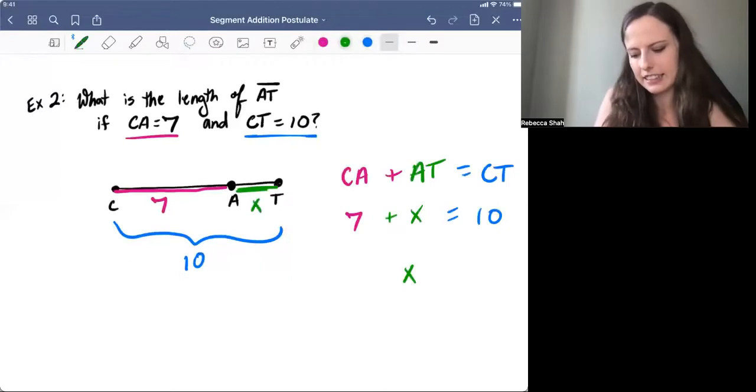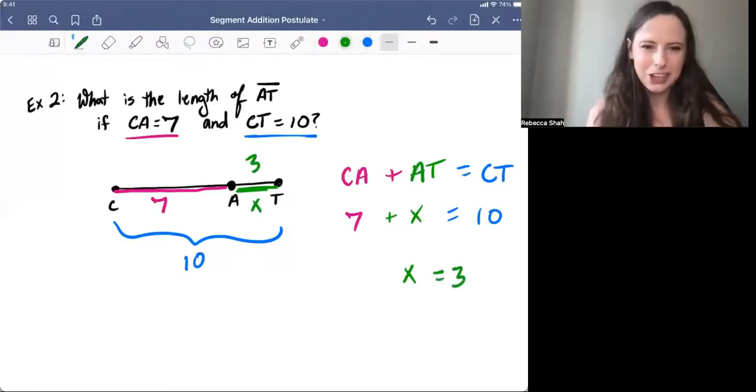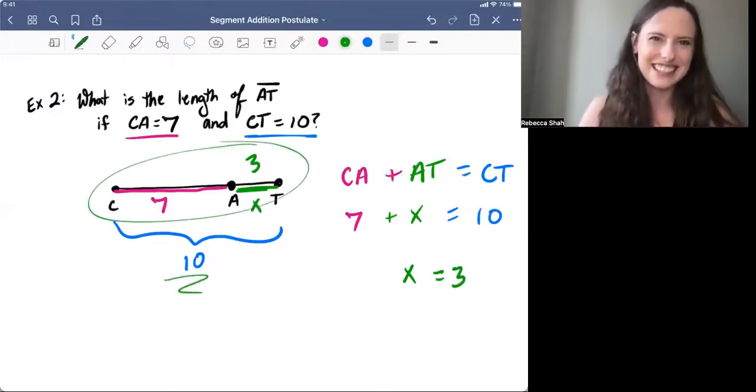Well, from here, we can see that X equals three. And we can double-check our answer by checking. Does seven plus three really equal 10? Yes, it does.